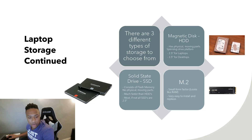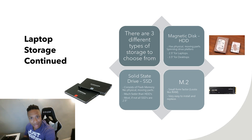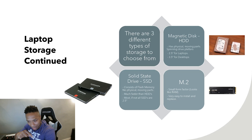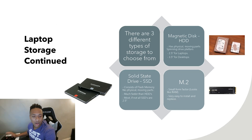The next type is the solid state drive — SSD — and this one is way better. When you switch from an HDD to an SSD your computer is going to be blazing fast. The reason is SSDs have no physical moving parts — no read/write head physically moving up and down. It's all flash memory, and flash memory is super quick. Most if not all SSDs are 2.5 inches, so keep that in mind for the test as well.